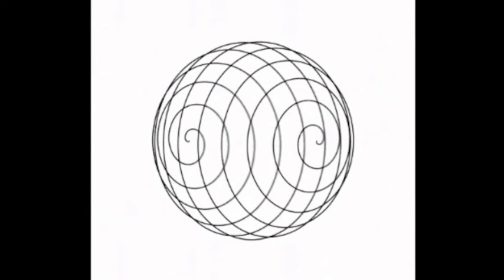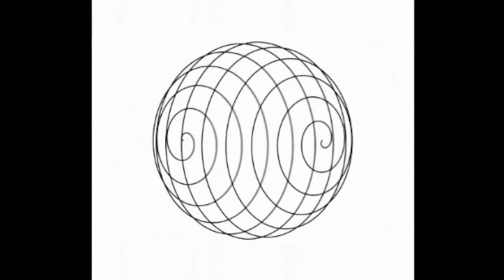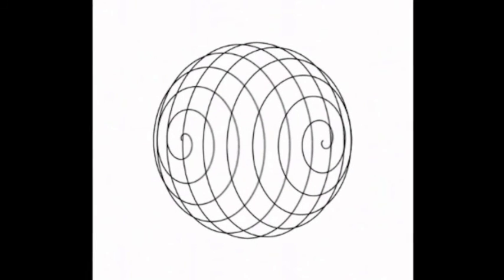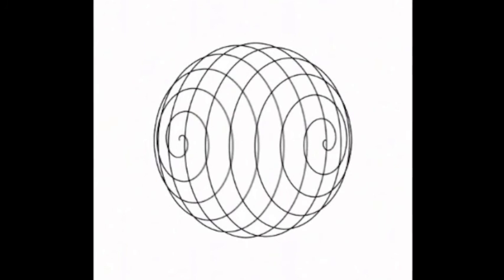If we consider the gravitational field and the electromagnetic field from the standpoint of the ether hypothesis, we find a remarkable difference between the two. There can be no space nor any part of space without gravitational potentials, for these confer upon space its metrical qualities, without which it cannot be imagined at all. The existence of the gravitational field is inseparably bound up with the existence of space.